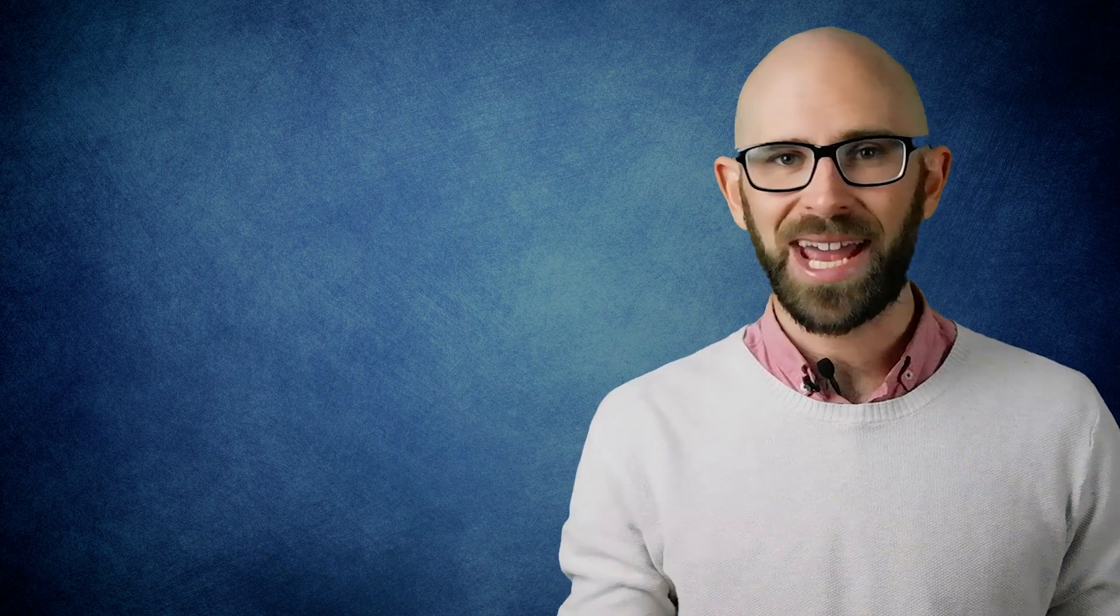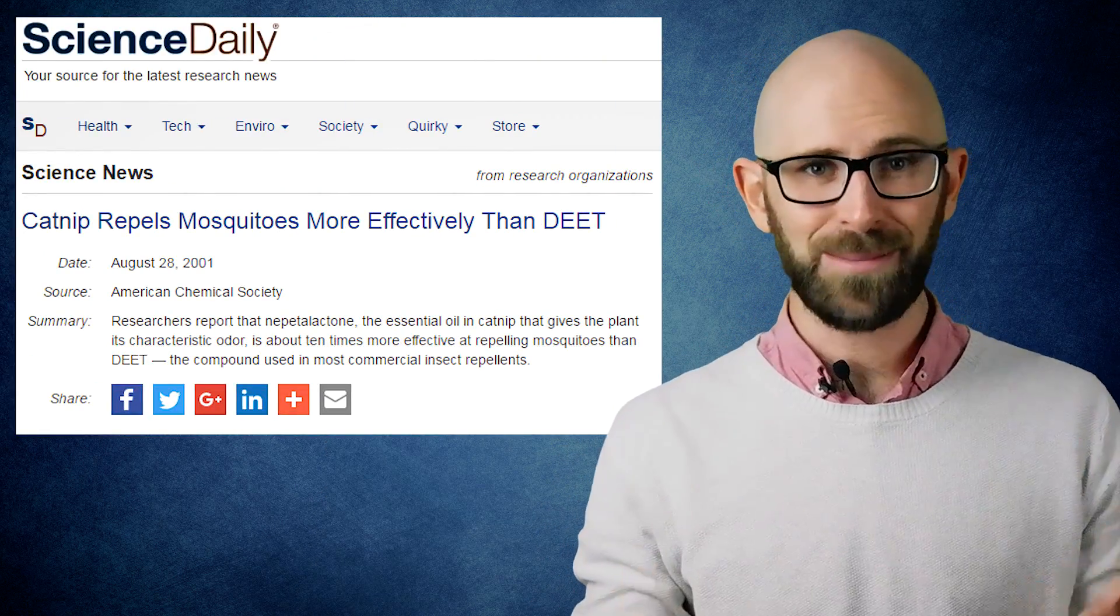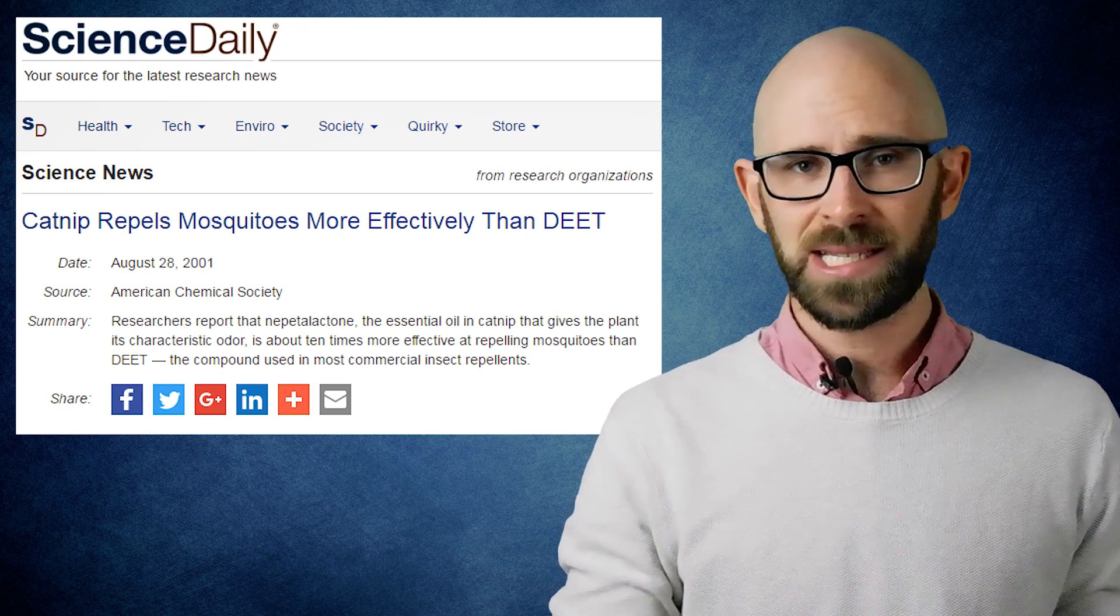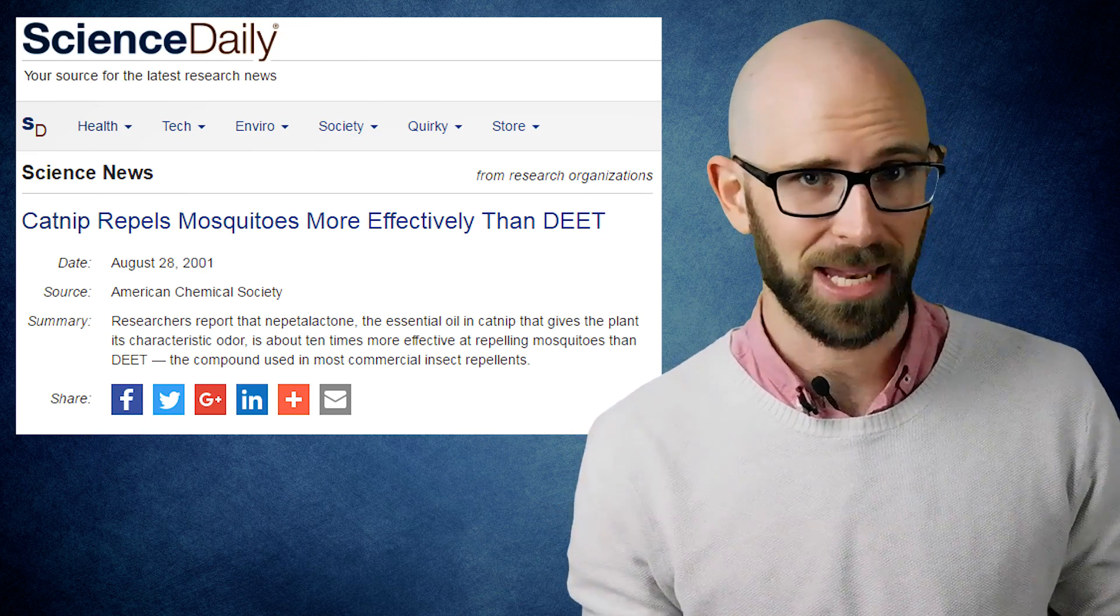Not only are very young cats sometimes averse to catnip, but so are cockroaches, mosquitoes, flies, and termites. In fact, nepetalactone extract has been shown to be 10 times more effective at repelling mosquitoes than DEET, which is a very common ingredient in mosquito repellent.